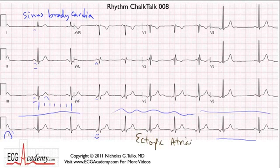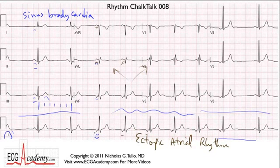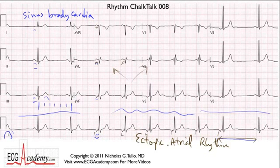This ectopic atrial rhythm is a little bit faster than the sinus bradycardia present here. The P wave axis is headed up and toward the right, but positive in AVL, which supports origin in the right atrium. This ectopic atrial rhythm has a little bit of a warm-up — it starts out slow, builds up a bit — but then after it ends, there's a fairly long pause.